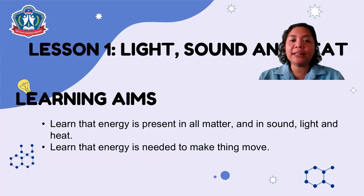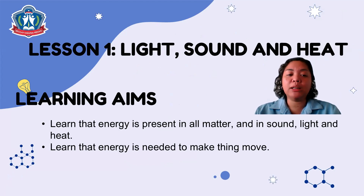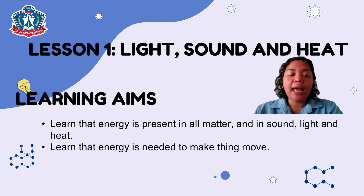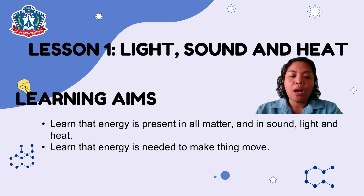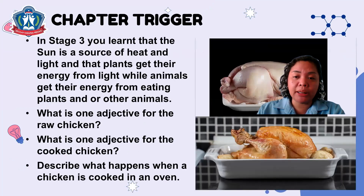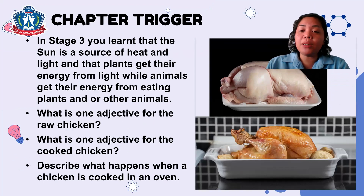Let's start with Lesson 1: Light, Sound and Heat. The learning aims for this lesson are to learn that energy is present in all matter and in sound, light and heat, and to learn that energy is needed to make things move. For our chapter trigger, take a look at these two pictures of the chicken.